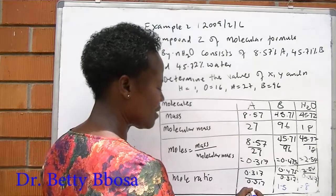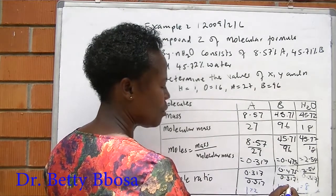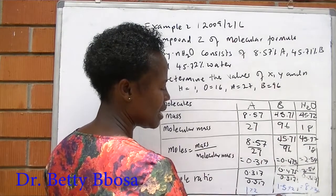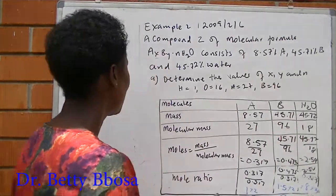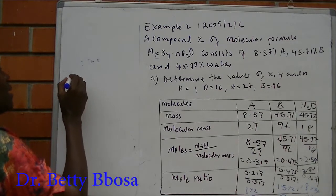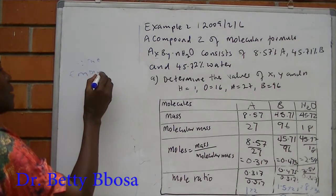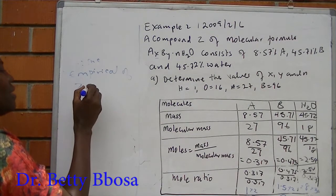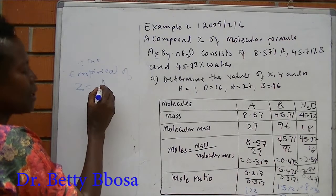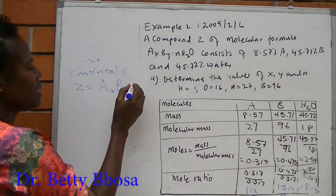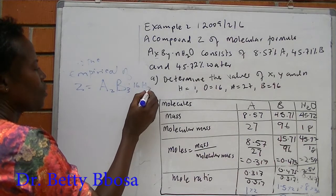So this times 2, times 2, and times 2. This is 2, this is 3, and this is 16. Therefore, the empirical formula of Z is equal to A2B3·16 waters.